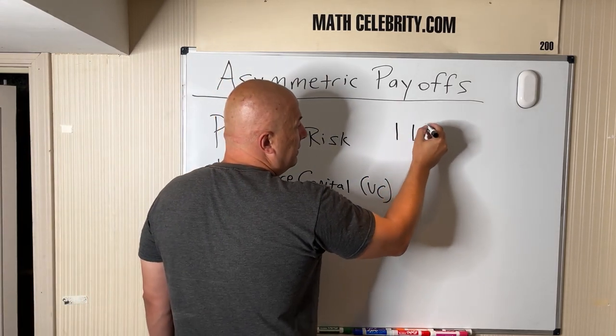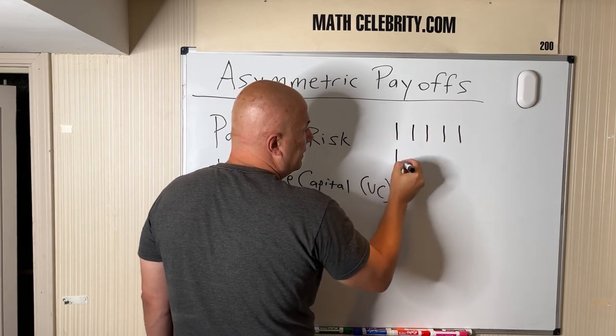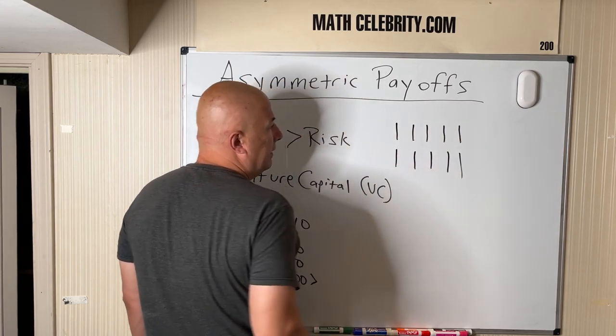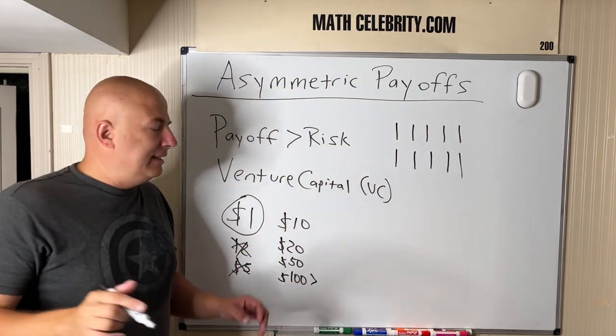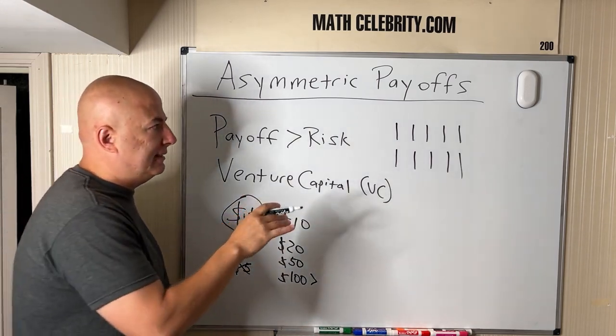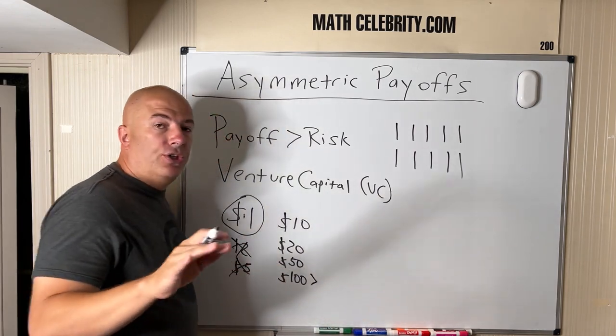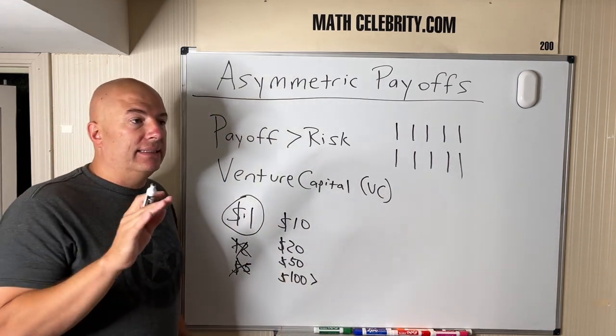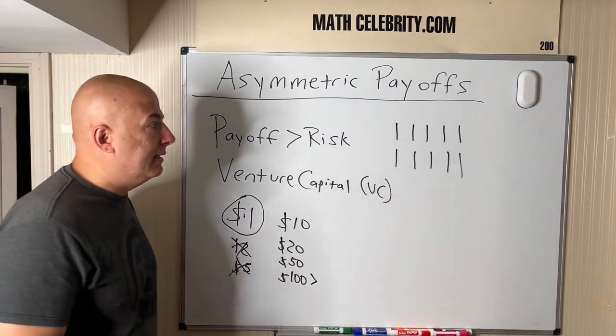Let's say they put one dollar on 10 companies. The way venture capital funds make money is they'll have 10 companies, three, four, five, six, seven, eight, nine, ten. And just for the sake of easiness, let's say they put a dollar down. They're putting millions down, but let's say a dollar in each of these.